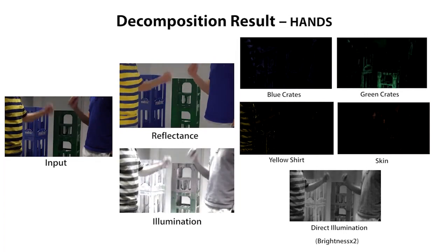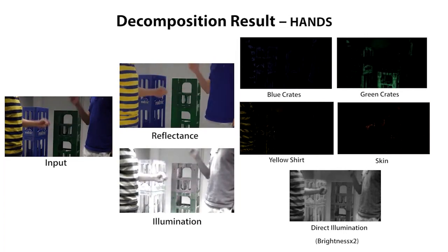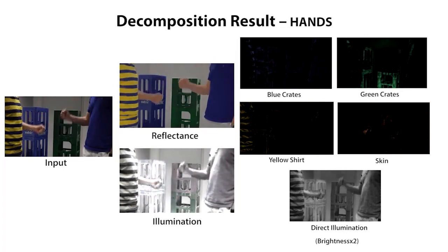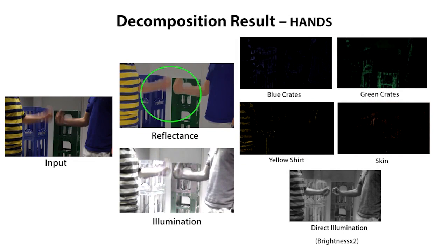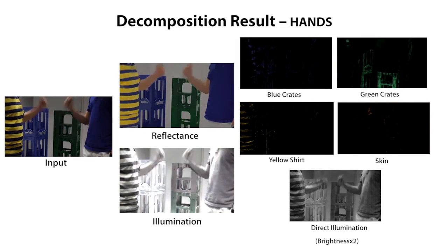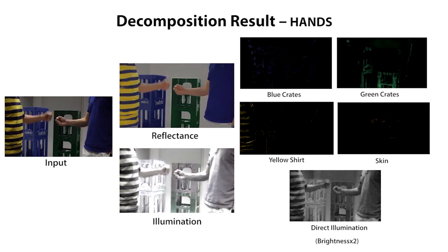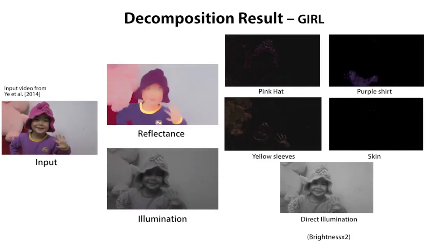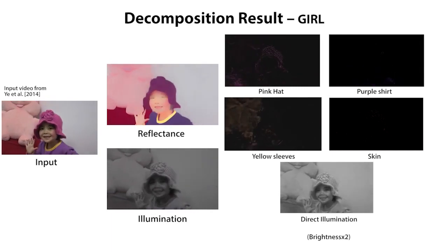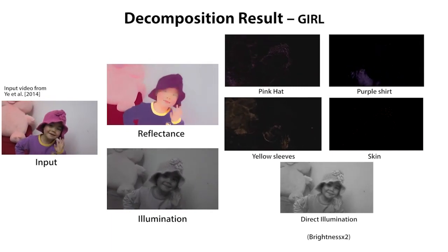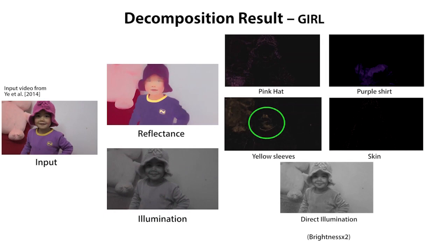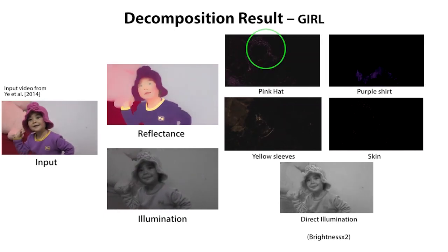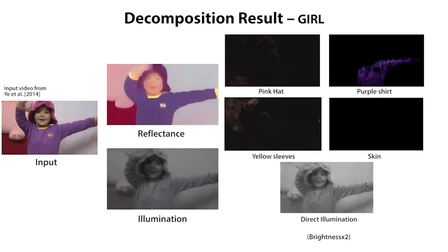This scene shows interesting inter-reflections between and within the various objects. Our method works even in the presence of strong motion blur, accurately decomposing the illumination on the hand. We show our results on this legacy sequence introduced by Ye and colleagues. We accurately identify the spill from the yellow collar to the child's face and hands. Also note the inter-reflections within the woolly hat and the shirt.